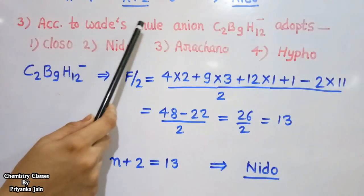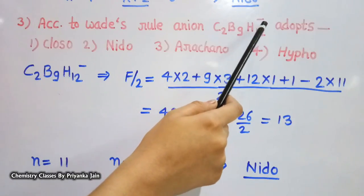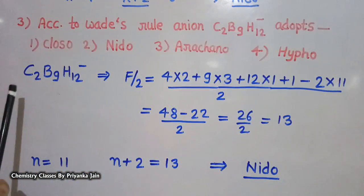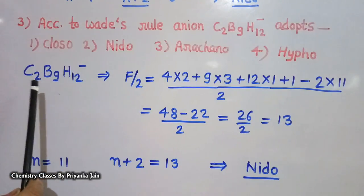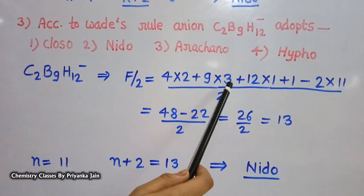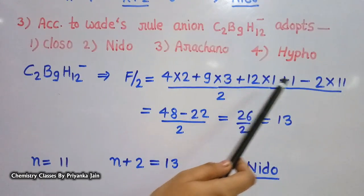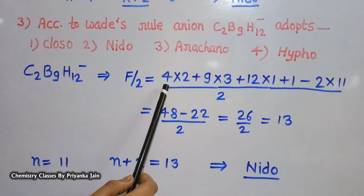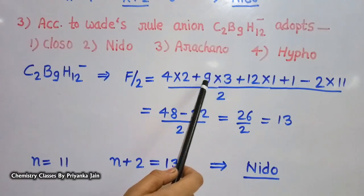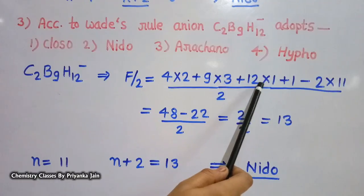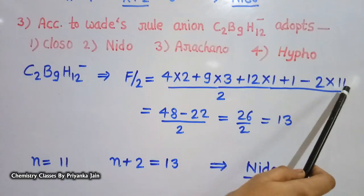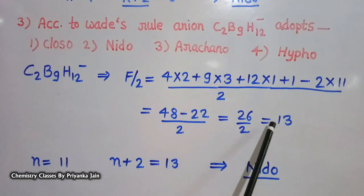The third question: according to Wade's rule, the anion C2B9H12⁻ adopts which structure — closo, nido, arachno, or hypo? For this anion, SEP = (4×2 + 3×9 + 1×12 + 1 for the negative charge − 2×11) / 2, giving 13 skeletal electron pairs.